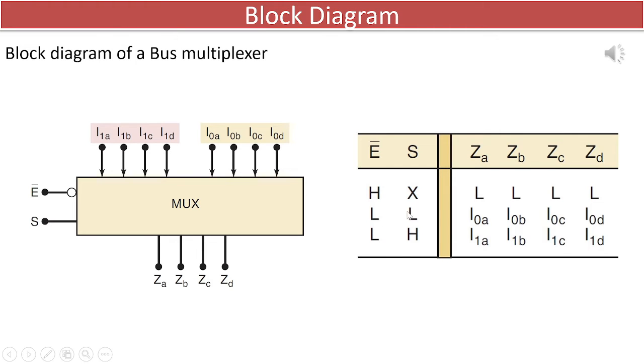Now, if the select line is connected to low logic, the inputs I0A, I0B, I0C, I0D are selected at the output.